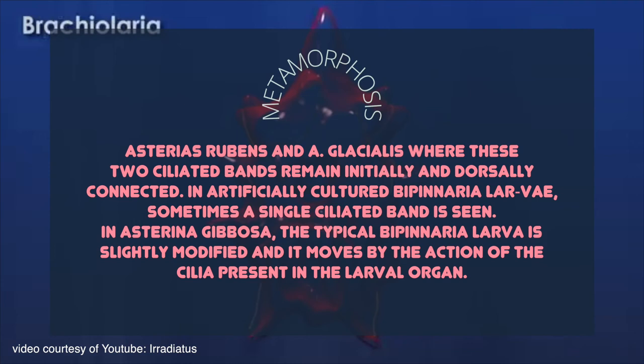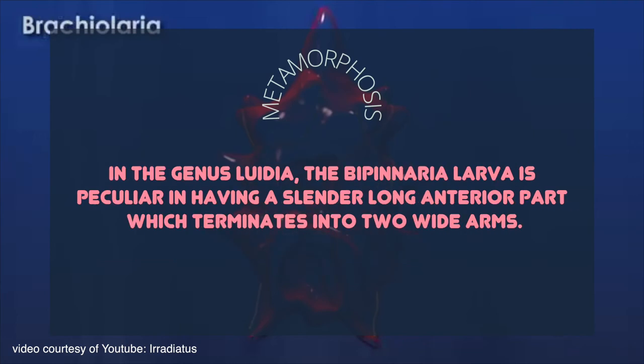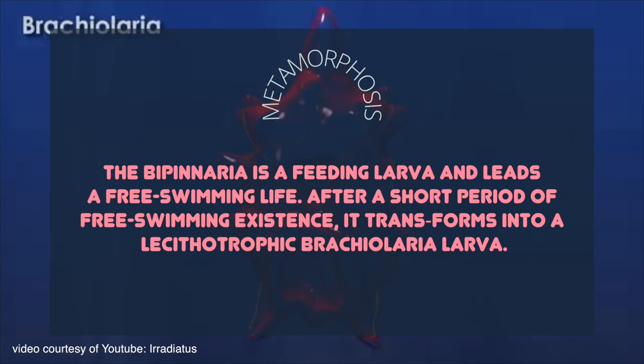In Asterina gibosa, the typical bipinnaria larva is slightly modified and it moves by the action of the cilia present in the larval organ. In the genus Luidia, the bipinnaria larva is peculiar in having a slender long anterior part which terminates into two wide arms. This larval form is named by Sars as bipinnaria asterigera. The bipinnaria is a feeding larva and leads a free-swimming life.